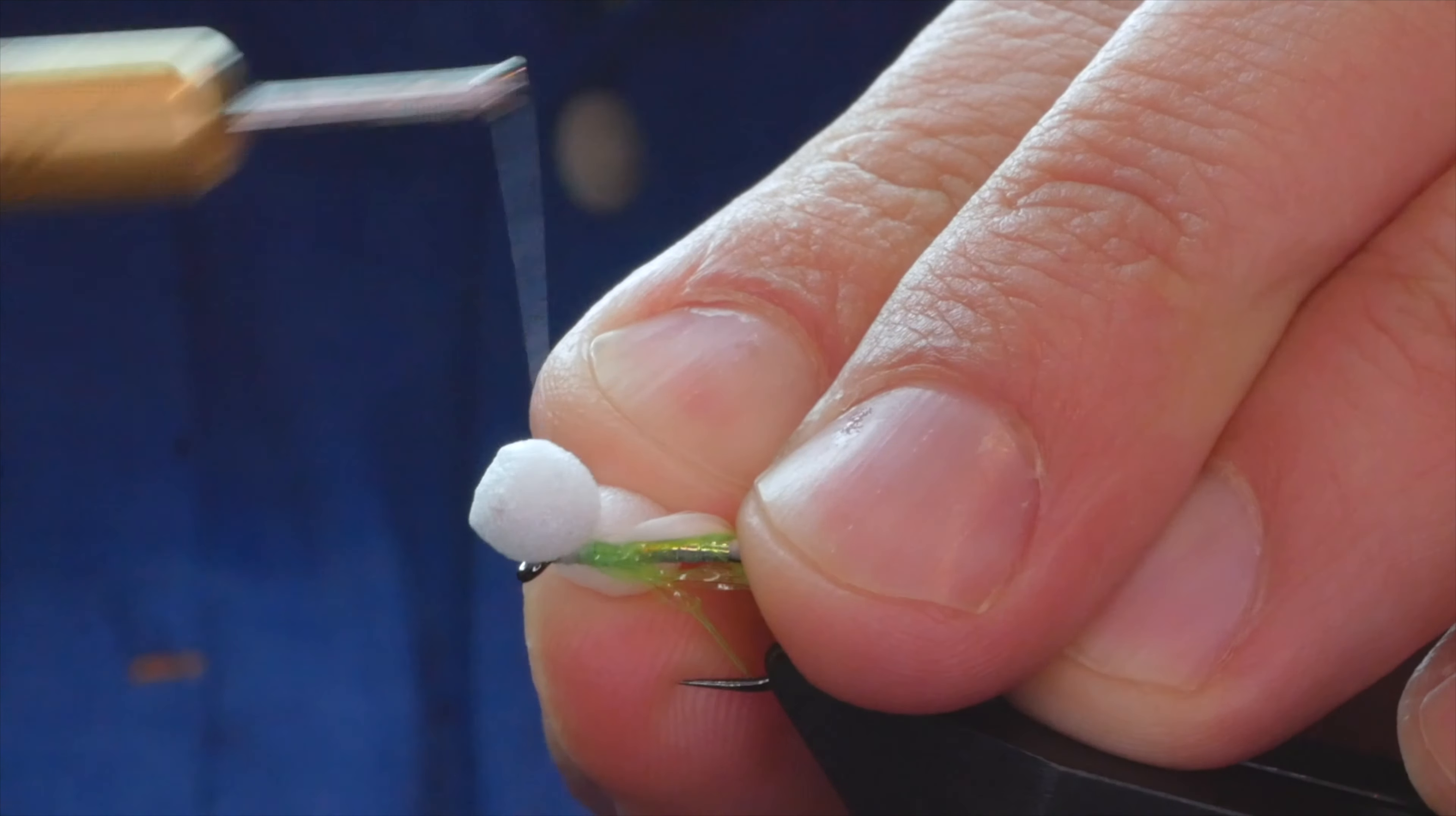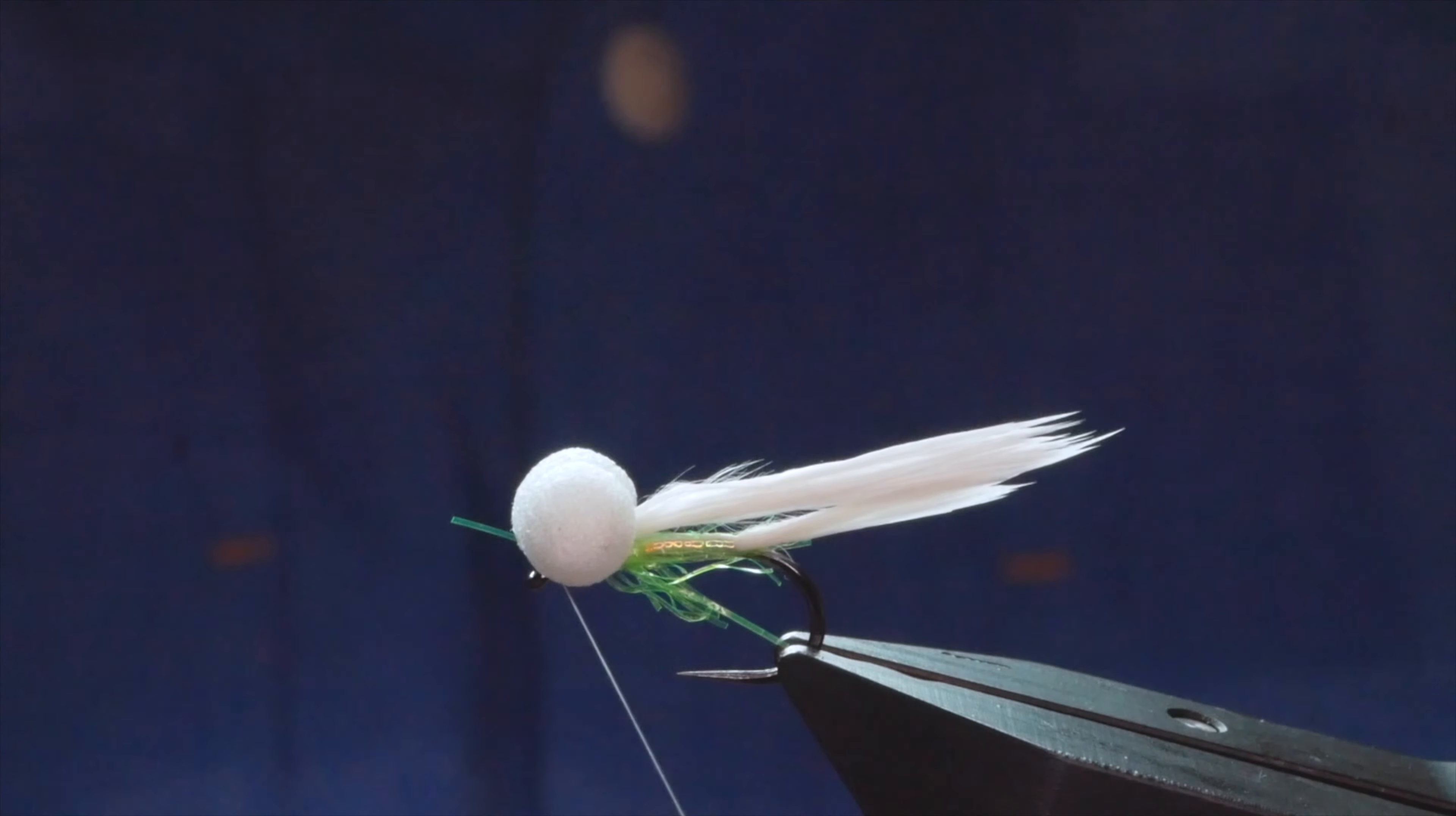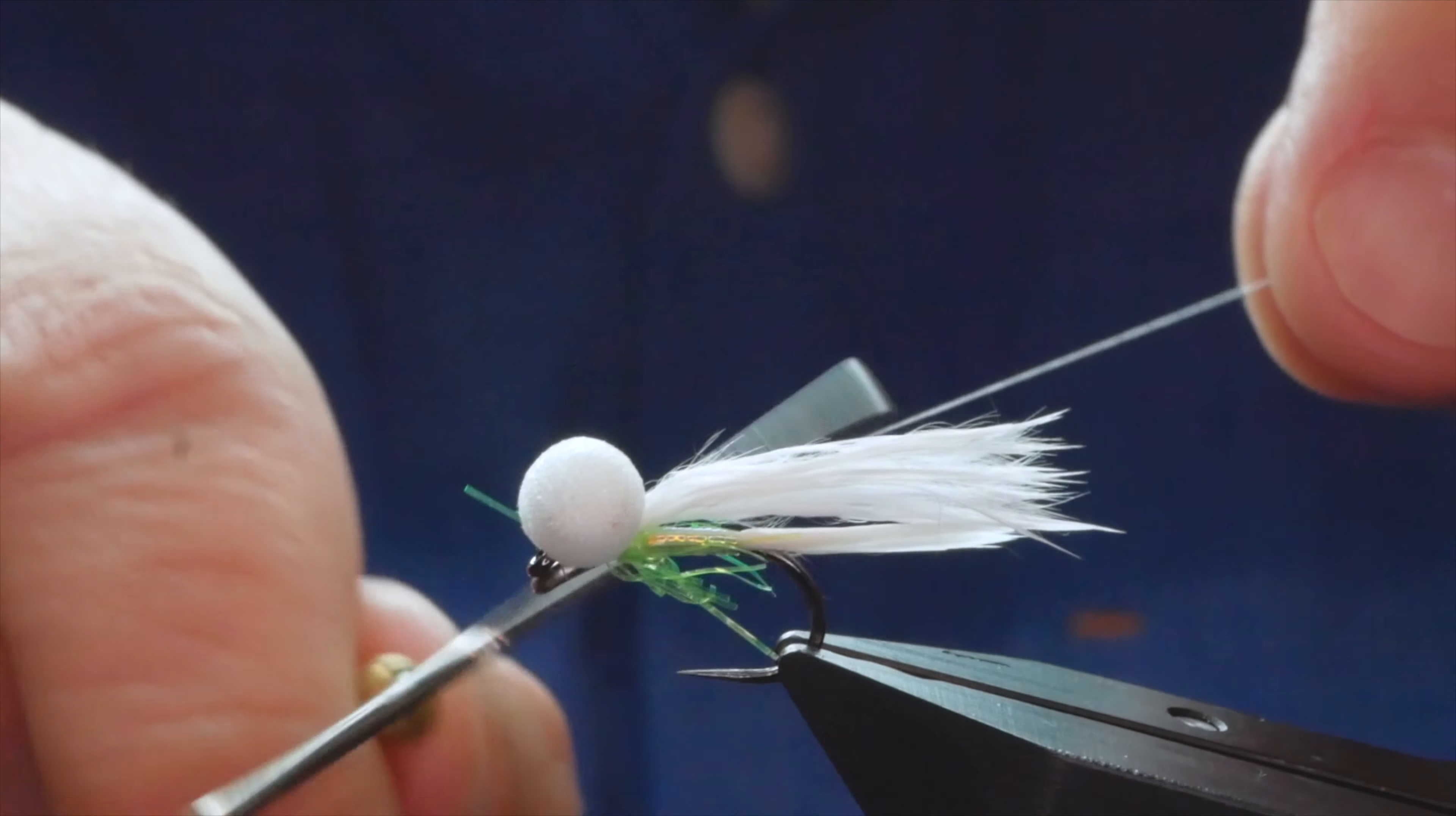I like to use four or five turns to secure my booby eyes into place. Don't worry if any of that straggle comes in to upset your day, you can always pick it out once the fly's done. Then to the front of the hook, take several turns. Then you can come in with your whip finish tool, pull your booby eyes to the rear, and whip finish away.